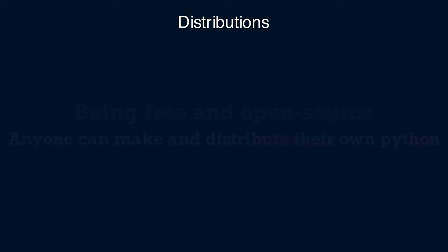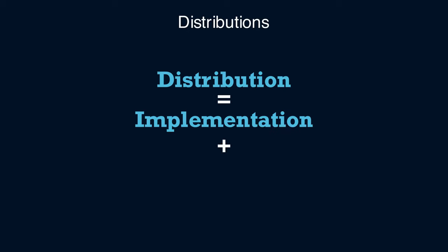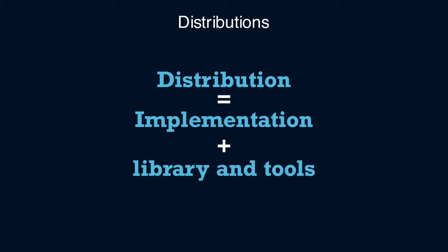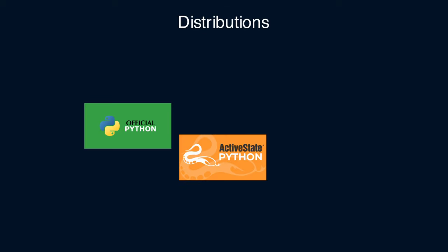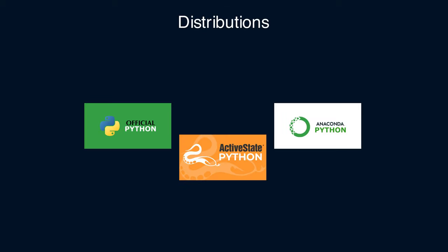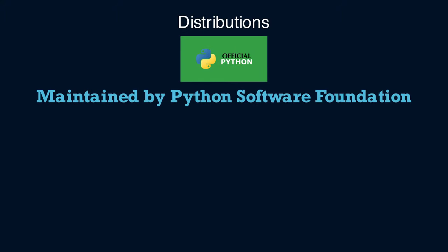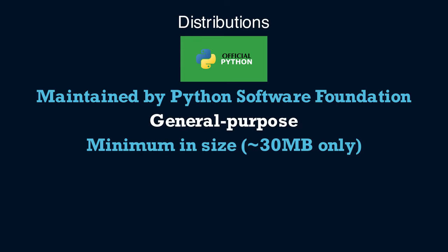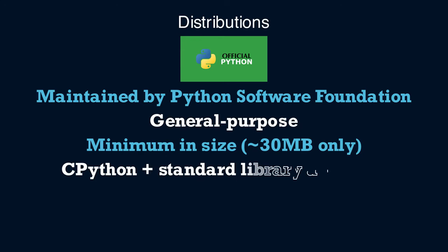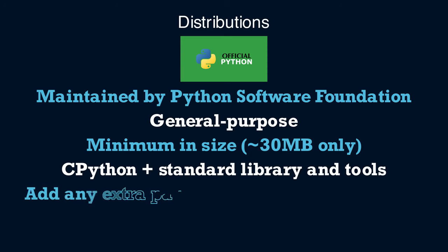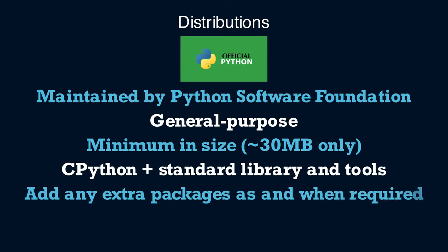A distribution means the Python implementation and the essential libraries and tools packaged together. Three popular distributions include: the official distribution maintained by the Python Software Foundation — the bare minimum, comes with CPython and a standard library of essential packages, and you can later add any extra third-party packages as required.